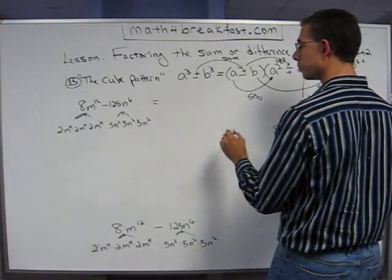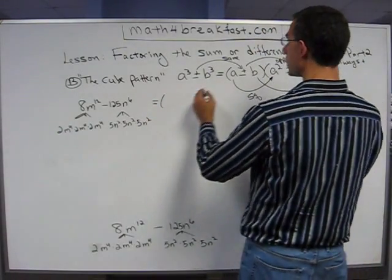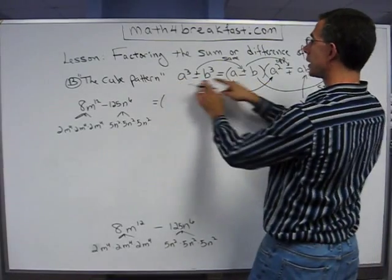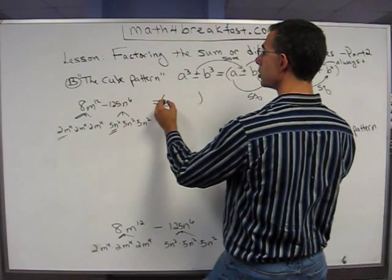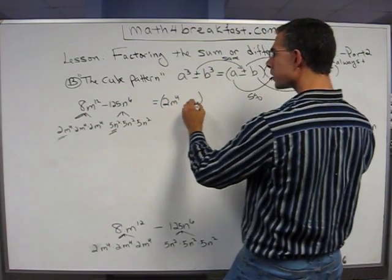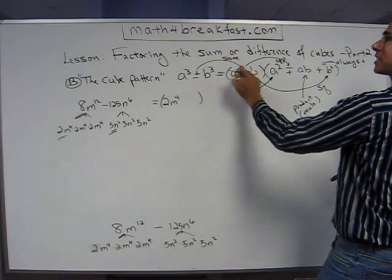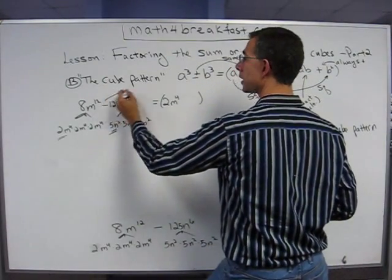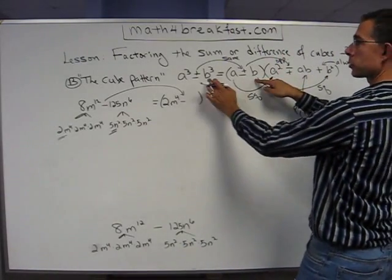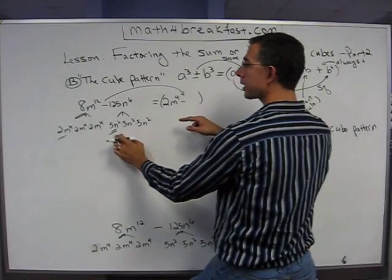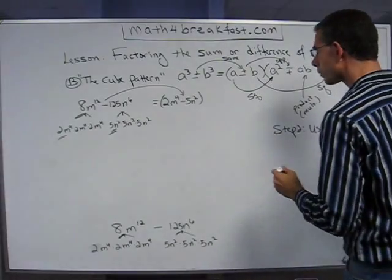The pattern is parenthesis, parenthesis. Here it's a cube, here it's not. So let me take my not. So 2m to the 4th. What sign do I put in between them? Well, following the pattern, I use in this binomial the same sign as what I had over here. So in this case, the same sign is a minus. And then the b, the b is not cubed. This was cubed here. This is not cubed. So I take my not cubed expression, which is the 5n squared.